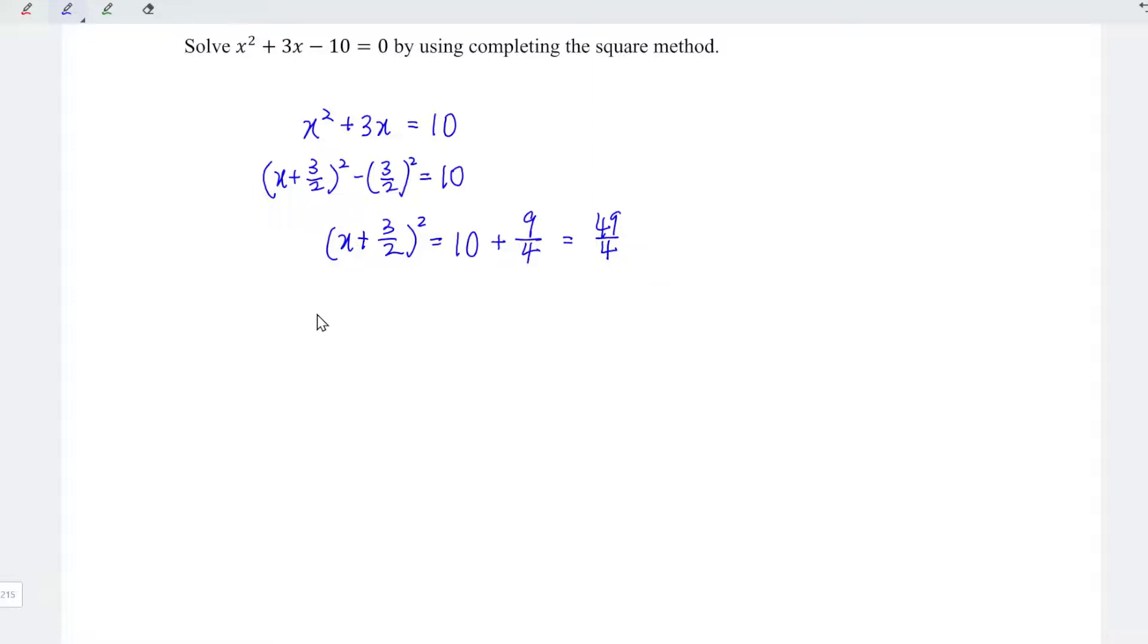Now let's take the square root of both sides. So we have x plus 3 over 2. Square and square root cancel each other, no more. And this equals square root of 49 over 4. Remember to add plus minus. And this equals plus minus, square root of 49 is 7, square root of 4 equals 2.